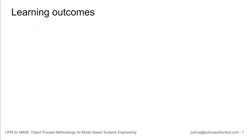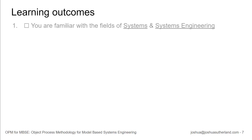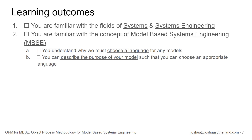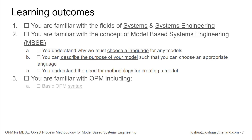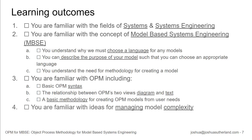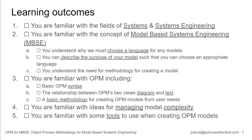So by the end of this course, you should be able to do the following things: be familiar with the fields of systems and systems engineering; be familiar with the concept of model-based systems engineering, MBSE; understand why we must choose a language for any models we make; describe the purpose of your model such that you can choose an appropriate language; understand the need for a methodology for creating a model; be familiar with OPM, including basic OPM syntax and the relationship between the diagram and text; have a basic methodology for creating OPM models from user needs; and be familiar with the ideas of managing model complexity and tools for creating OPM models.